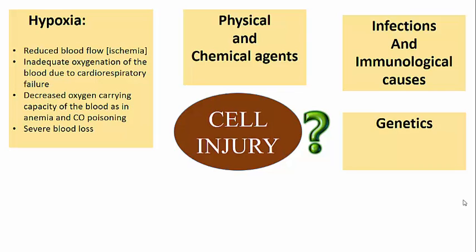Moving on to genetics as a cause of cell injury. Genetic abnormalities can be as subtle as a single base pair substitution or as obvious as chromosomal abnormalities. They can cause cell injury due to deficiencies of functional proteins, in the form of inborn errors of metabolism, or through accumulation of damaged DNA — all of which result in susceptibility to injurious agents.